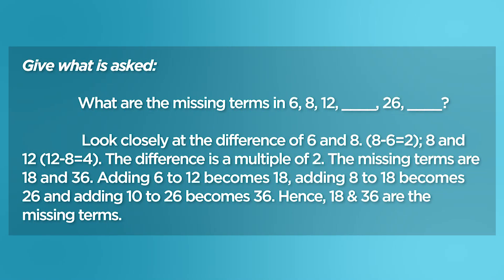Give what is asked. What are the missing terms in 6, 8, 12, 26? Look closely at the difference of 6 and 8: 8 minus 6 equals 2. Then 8 and 12: 12 minus 8 equals 4. The difference is a multiple of 2. The missing terms are 18 and 36. Adding 6 to 12 becomes 18, adding 8 to 18 becomes 26, and adding 10 to 26 becomes 36. Hence, 18 and 36 are the missing terms.